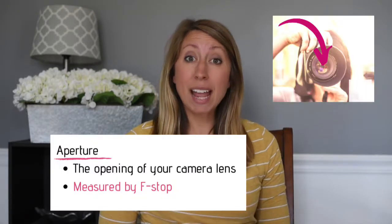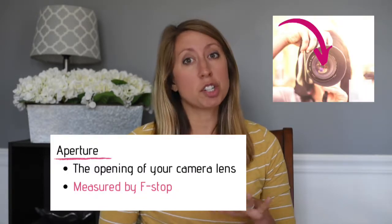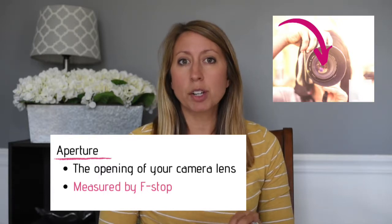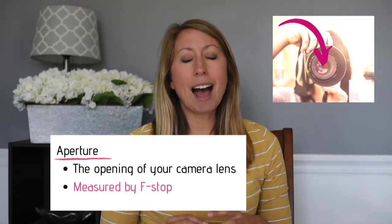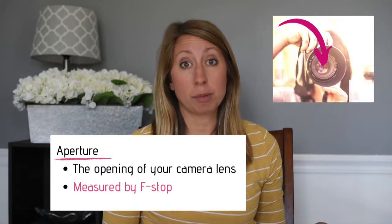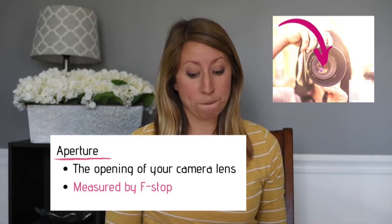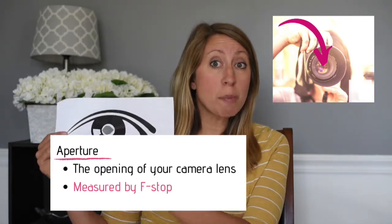To summarize what we learned in other modules: the first camera setting we talked about was aperture. Aperture, which is determined by the f-stop number on your camera, determines how large the opening is in your camera lens. It can be large or small, just like the pupil of an eye, to let in more light or less light.